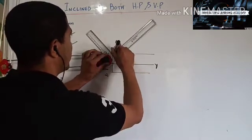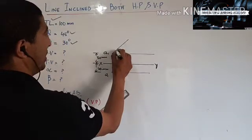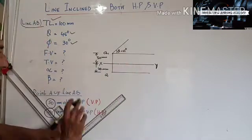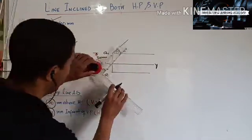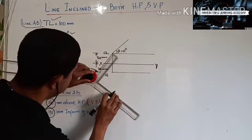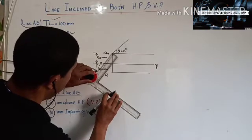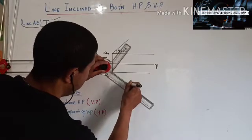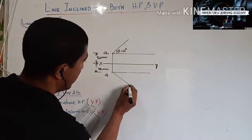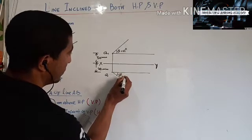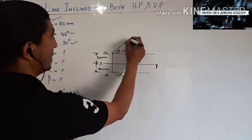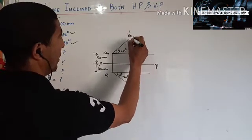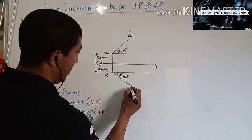I will draw the true length of the line. This is my angle theta, which was given as 45 degrees. Similarly, I will draw at 30 degrees angle and measure the true length of the line, which is 100 mm. This is my phi, which was given as 30 degrees, and this point is my B'1.